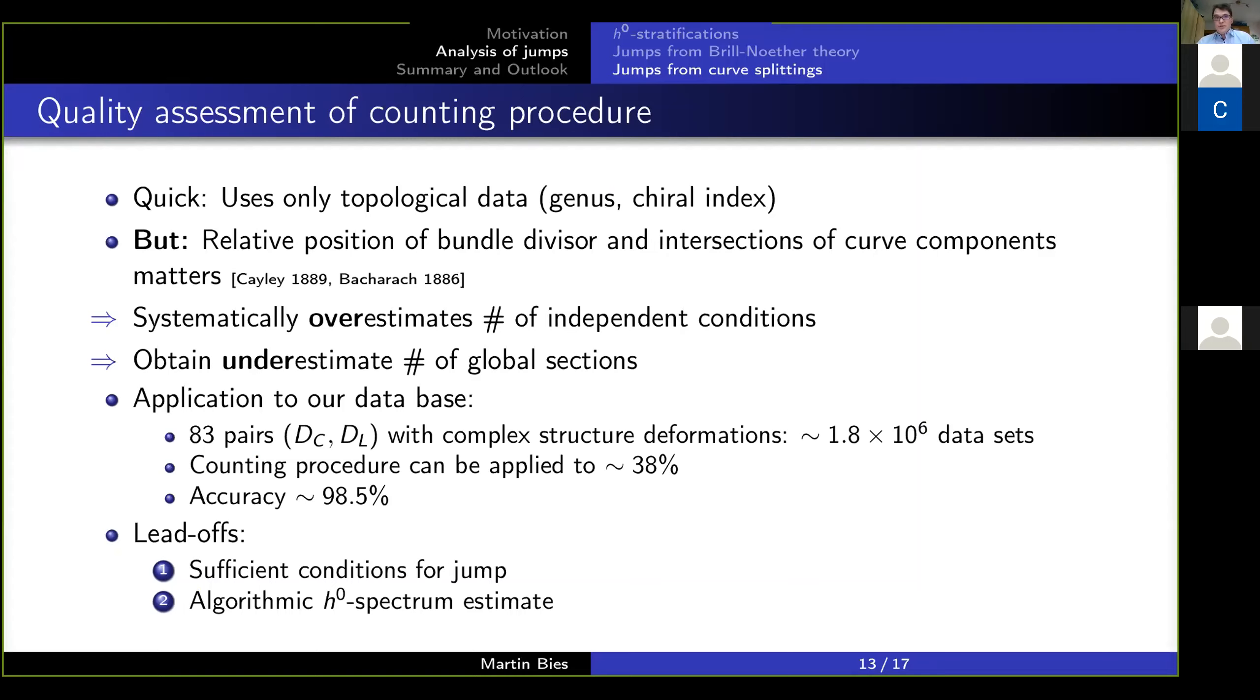And indeed, situations in which I'm actually overestimating the conditions follow from works that have been initiated by Castelnuovo and Brill already in the 18th century. Nonetheless, you can, of course, raise the question, how good am I doing? Am I always underestimating? Am I just underestimating in some cases? And to test this, I'm now taking this procedure to the database that we have created for our machine learning procedure.